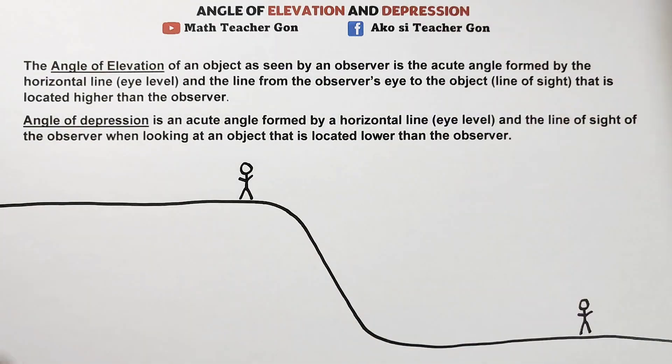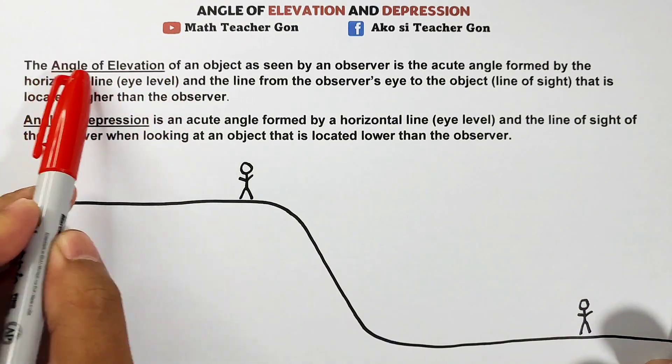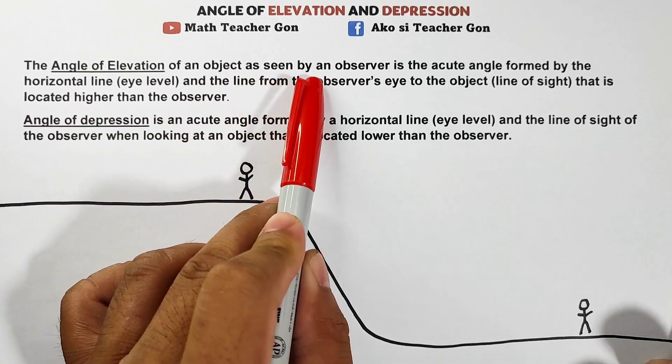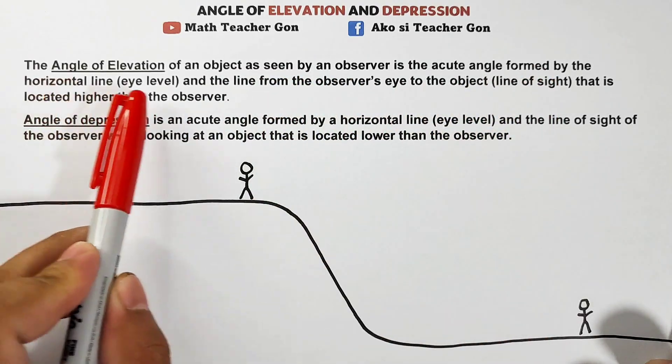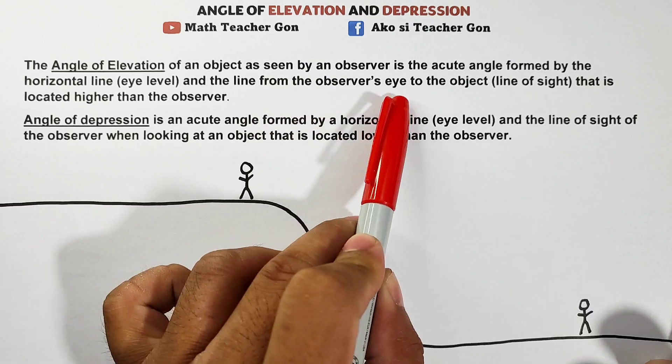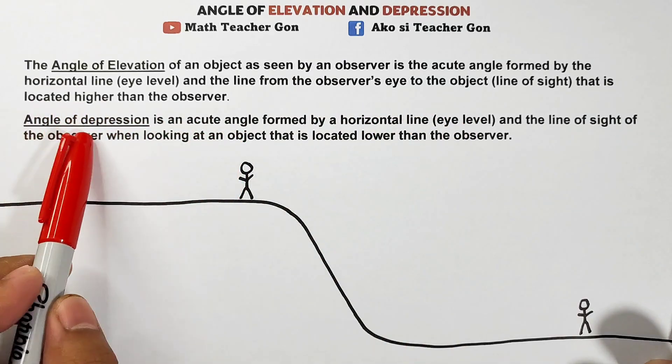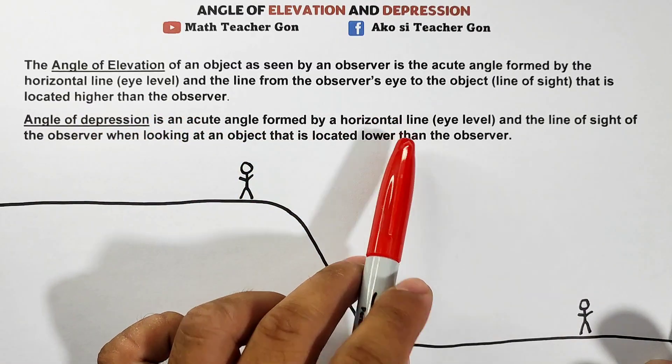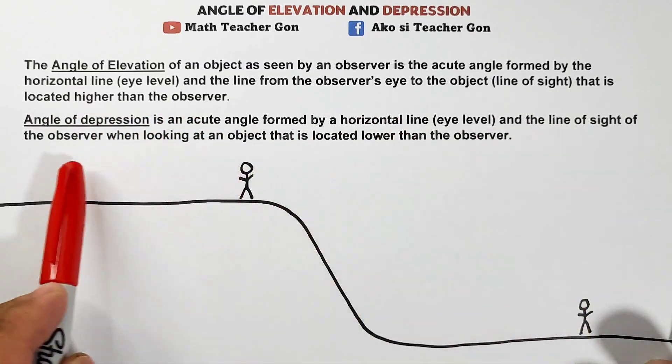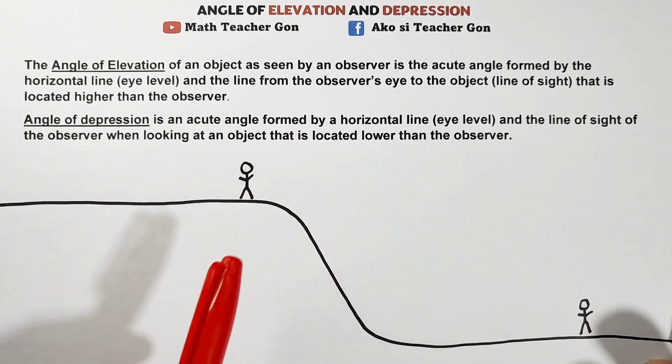Let's define first angle of elevation and angle of depression. The angle of elevation of an object as seen by an observer is the acute angle formed by the horizontal line and the line from the observer's eye to the object that is located higher than the observer. While the angle of depression is an acute angle formed by horizontal line and the line of sight of the observer when looking at an object that is located lower than the observer.